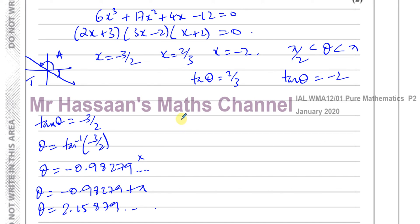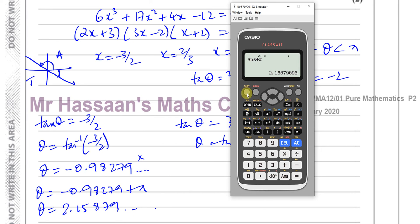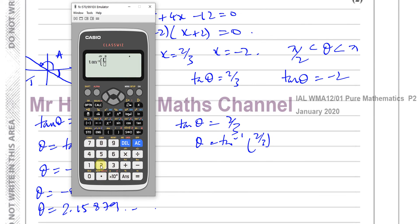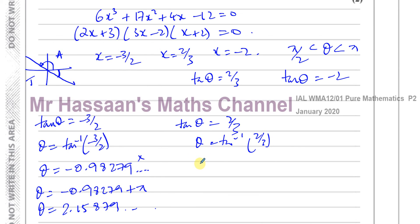Then we have tan theta equals 2 thirds. Now if I try to solve this, what I'll find is I'll get an angle which is acute. So if I say inverse tan—let's get rid of this—inverse tan of 2 over 3, now that gives me 0.58800. So theta equals 0.58800. Now that's going to be in this quadrant over here.